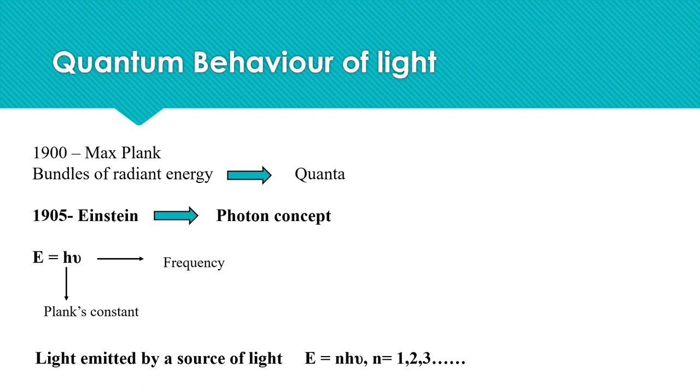In 1905, Einstein refined the quantum hypothesis of Planck by introducing photon concept. A photon represents the minimum energy units of light. Each photon carries an amount of energy proportional to the frequency of light wave given by E = hν, where h represents Planck's constant and ν represents frequency.